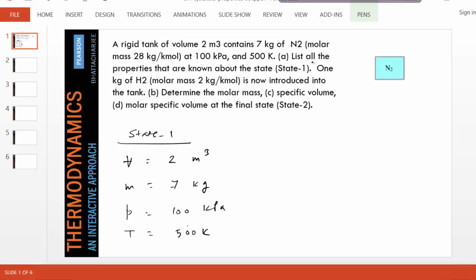And the first question is, list all the properties that are known about the state. So these are the properties. And of course, the molar mass of nitrogen is also given or we can look it up.